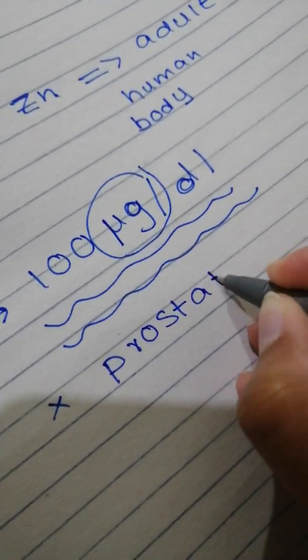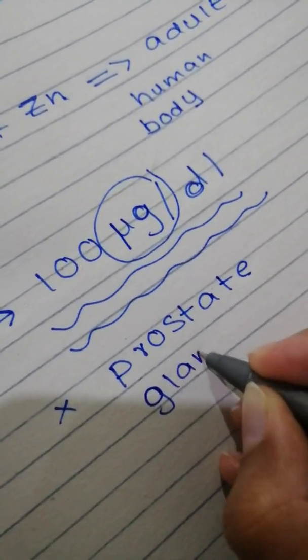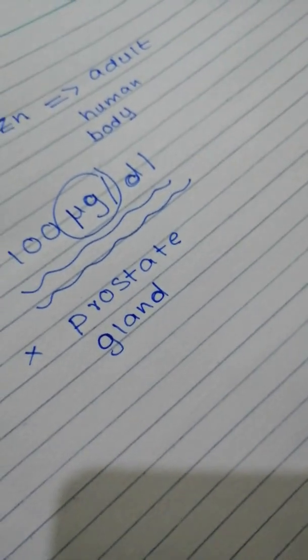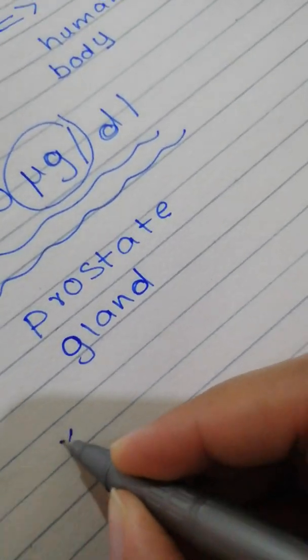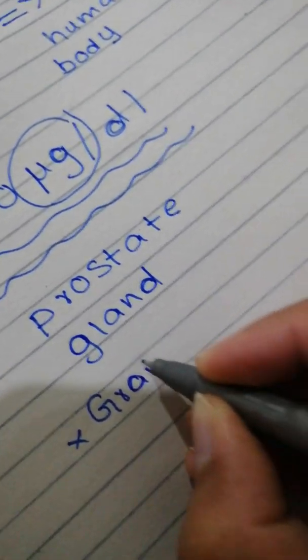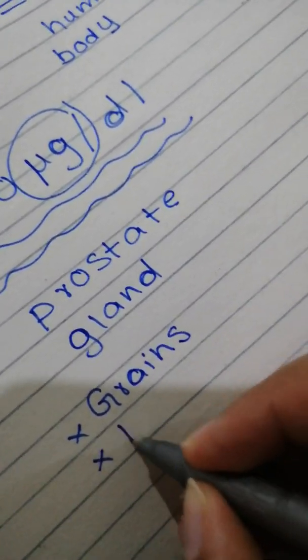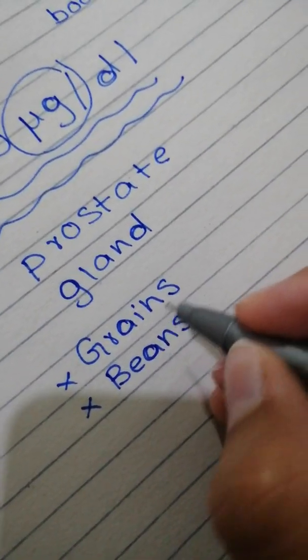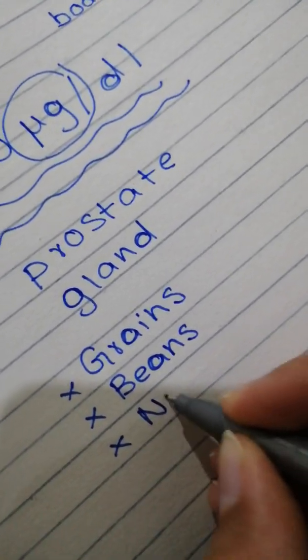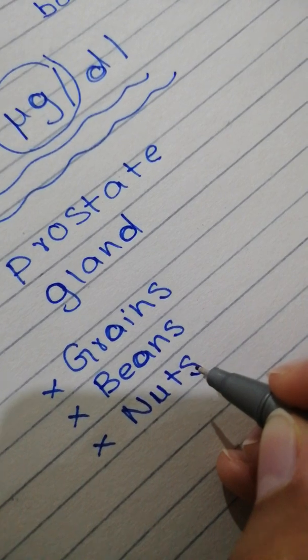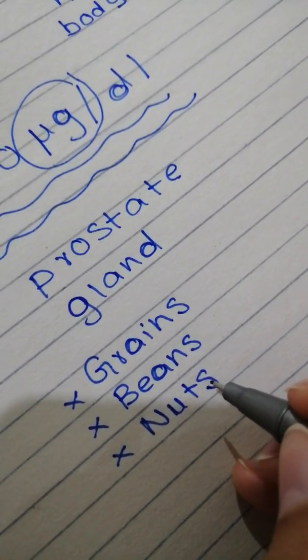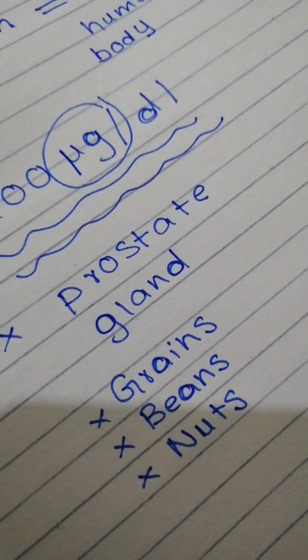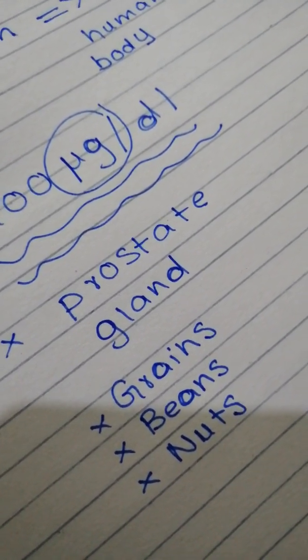The largest accumulation of zinc is in the prostate gland. We can talk about the sources of zinc: various kinds of grains, various kinds of beans, and nuts. These are three plant sources of zinc.